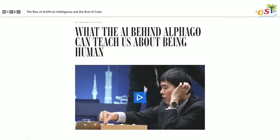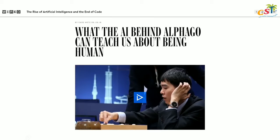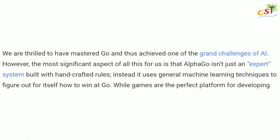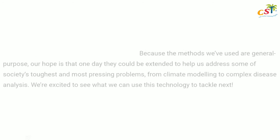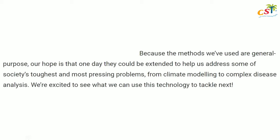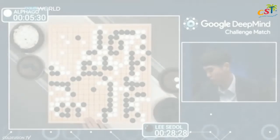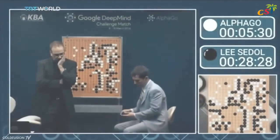AlphaGo is not an expert system, meaning that its algorithms could be used and applied to other things. Demis Hassabis, co-creator of DeepMind, highlighted this in a Google blog. Quote: 'We are thrilled to have mastered Go and thus achieved one of the grand challenges of AI. However, the most significant aspect of all of this for us is that AlphaGo isn't just an expert system built on handcrafted rules. Instead, it uses general machine learning techniques to figure out for itself how to win Go.' He goes on: 'Because the methods we've used are general purpose, our hope is that one day they could be extended to help us address some of society's toughest and most pressing problems, from climate modelling to complex disease analysis.' In other words, the algorithms that AlphaGo used to win Go could serve as a basis to be applied to very complex problems.